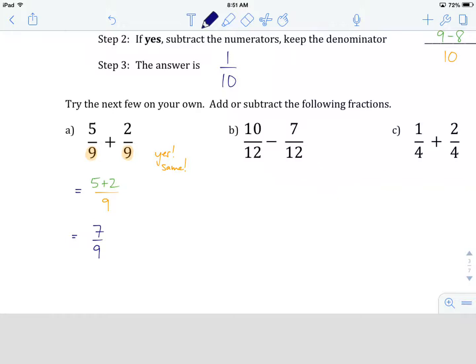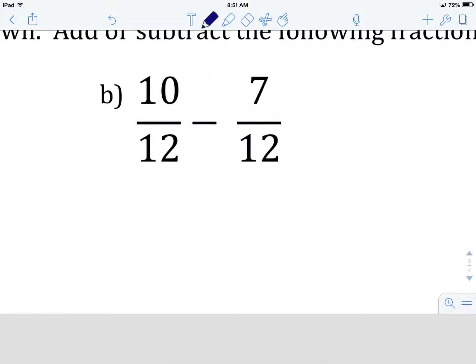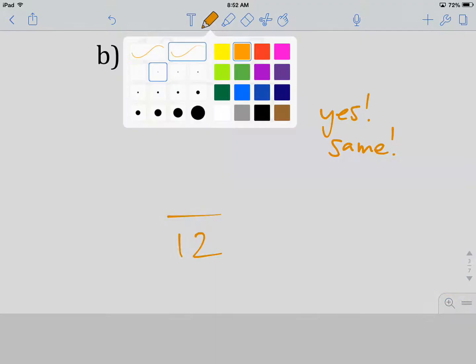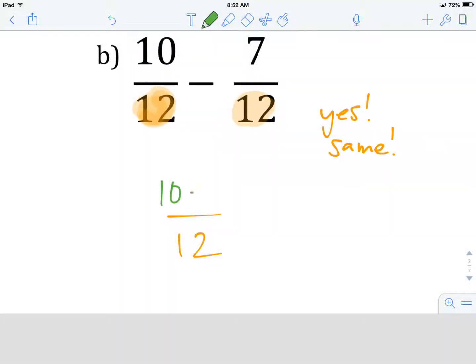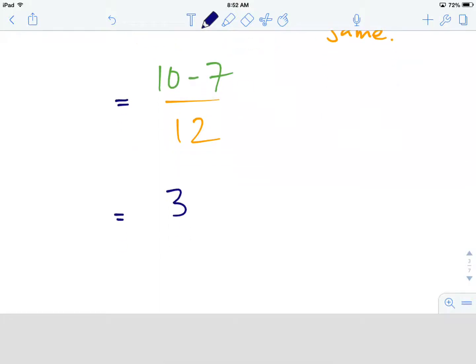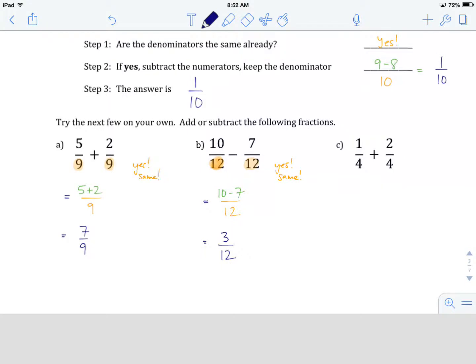What I'd like you to do is, following that same model, try B here on your own. When you've got an answer, come on back and we'll see how you did. All right, you're back. First thing you want to do, are my denominators the same? I look at my denominators, 12 and 12, so yes, my denominators are indeed the same. That tells me I can keep my denominator, and I am going to do whatever operation I'm being asked to do. In this case, I'm being asked to subtract. We have 10 minus 7, that's going to give me 3, and I'm going to keep my denominator, and that's going to be 12.